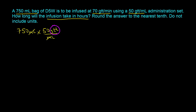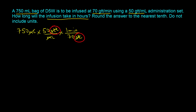Our next task is to get rid of the drops so that we have a quantity that gives us time. Looking at the flow rate, which is in drops per minute, we want to flip that. So we multiply by one minute per 70 drops — every minute you're able to give 70 drops. The drop term cancels out and we are left with units of time in minutes.